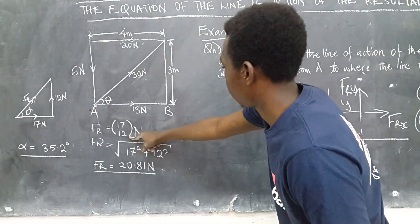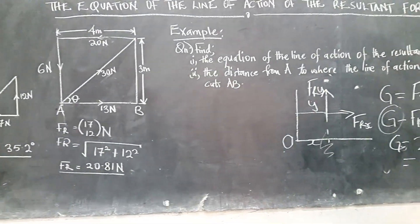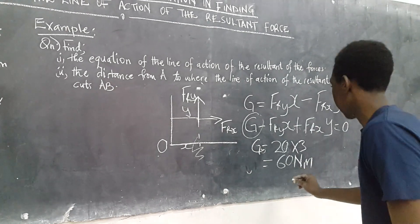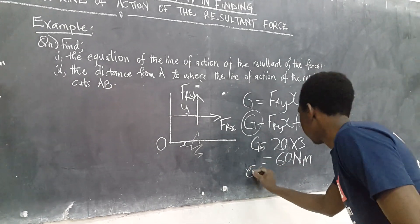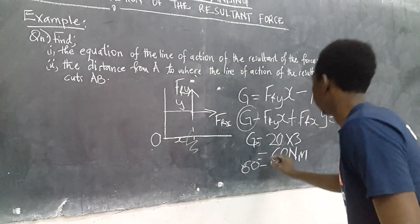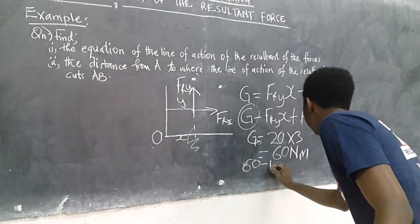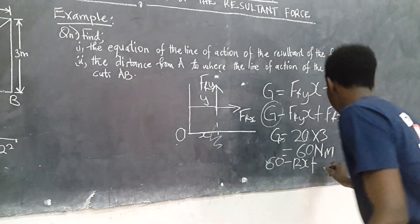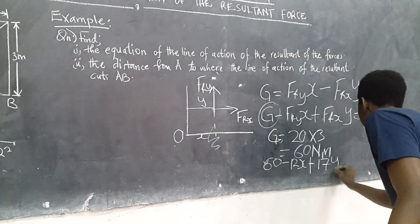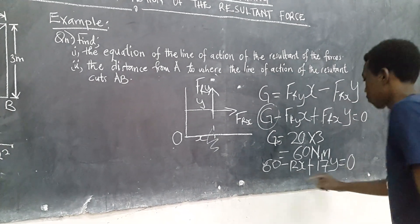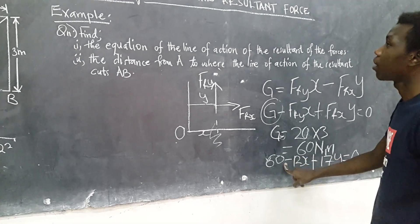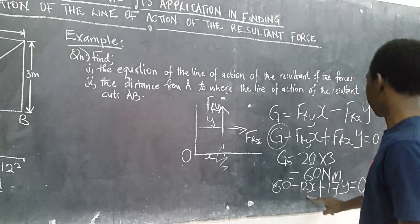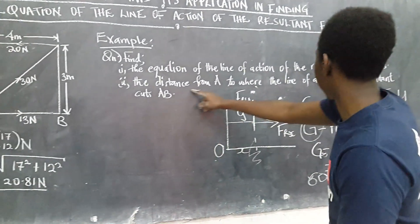And now since we have our resultant force in the X and the resultant force in the Y we shall come to our equation here and say 60 minus FRY is 12 times X plus FRX which is 17 times Y is equal to 0. So now this is our equation of the line of action of the resultant force.